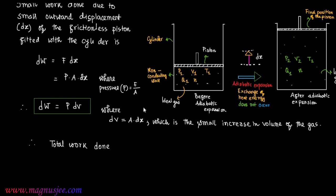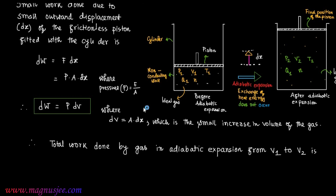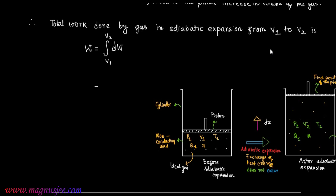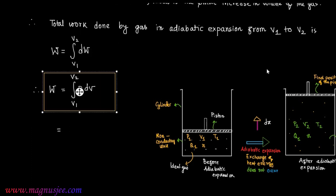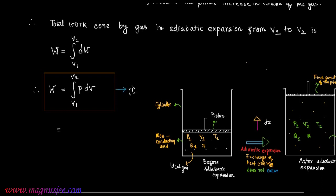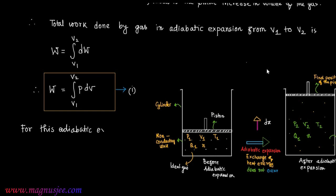Therefore, the total work done by the ideal gas in the adiabatic expansion from volume V1 to V2 is W = ∫dW = ∫(V1 to V2) P dV, which is equation 1. For this adiabatic expansion, PVγ = constant = K, therefore P = K / Vγ.